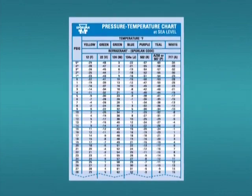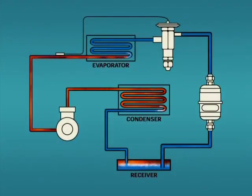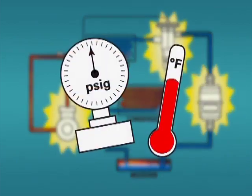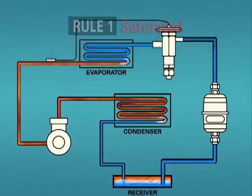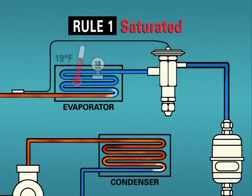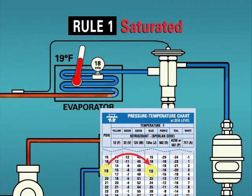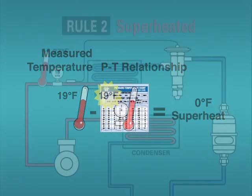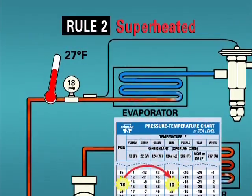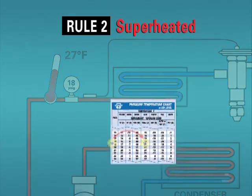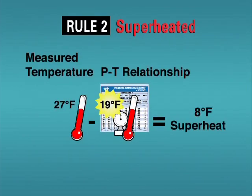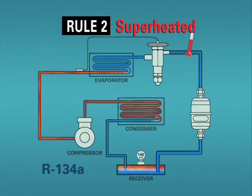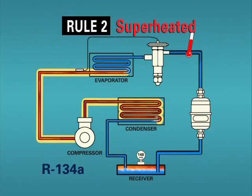With the PT card, we should be able to determine the condition of the refrigerant at any point in the system by remembering the following rules. Rule 1: If we have a liquid and vapor mixture present, as we do in the evaporator and condenser, we have saturated refrigerant which will correspond to our PT card. Rule 2: We have superheated vapor when our measured temperature is greater than the saturation temperature indicated by our PT card. The amount of superheat will be the difference in these two temperatures. Superheated vapor will be present in the suction and discharge lines of a normally operating system.